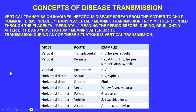Vertical transmission involves infectious disease spread from mother to child. There are related terms: transplacental means transmission through the placenta; perinatal means before, during, or slightly after birth; and postpartum means after birth. Any of these situations would be referred to as vertical transmission. As you can see in this diagram, the first three examples are vertical — transplacental, perinatal, and postpartum.